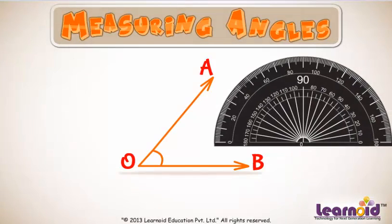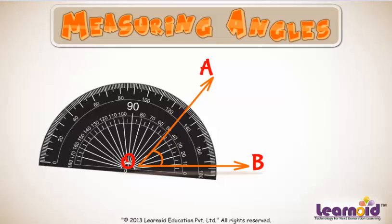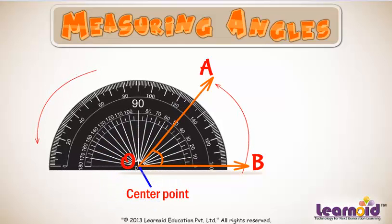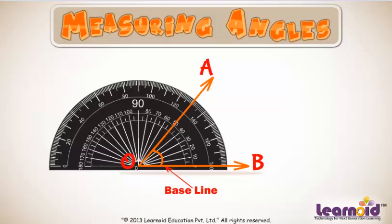place the protractor on the angle such that the center point of the protractor lies on vertex O of the angle. Now rotate the protractor about the center point so that one side of the angle matches with the baseline of the protractor.